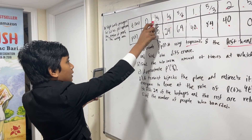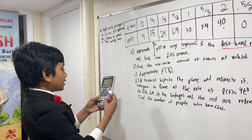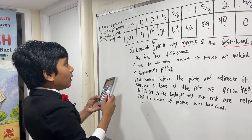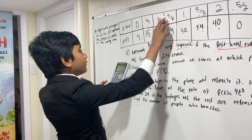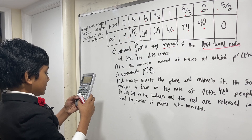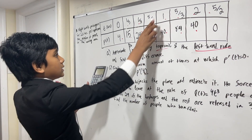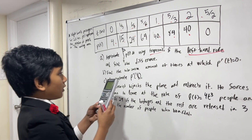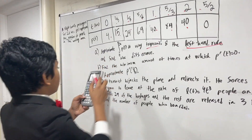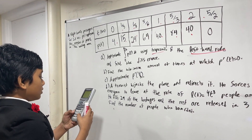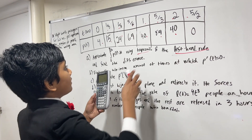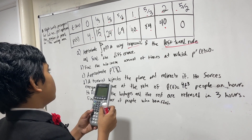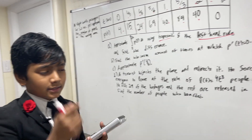So we're multiplying 1/5 by 4, so let's add that in. Then we're multiplying 1/3 by 15, so let's add that in. Then we're multiplying 5/6 by 24, so let's add that in. And then we're multiplying 1 by 64, so let's add that in. And then we're multiplying 5/3 by 40. Then we multiply 2 by 84. Wait — no, we don't do that, because I'm an idiot.